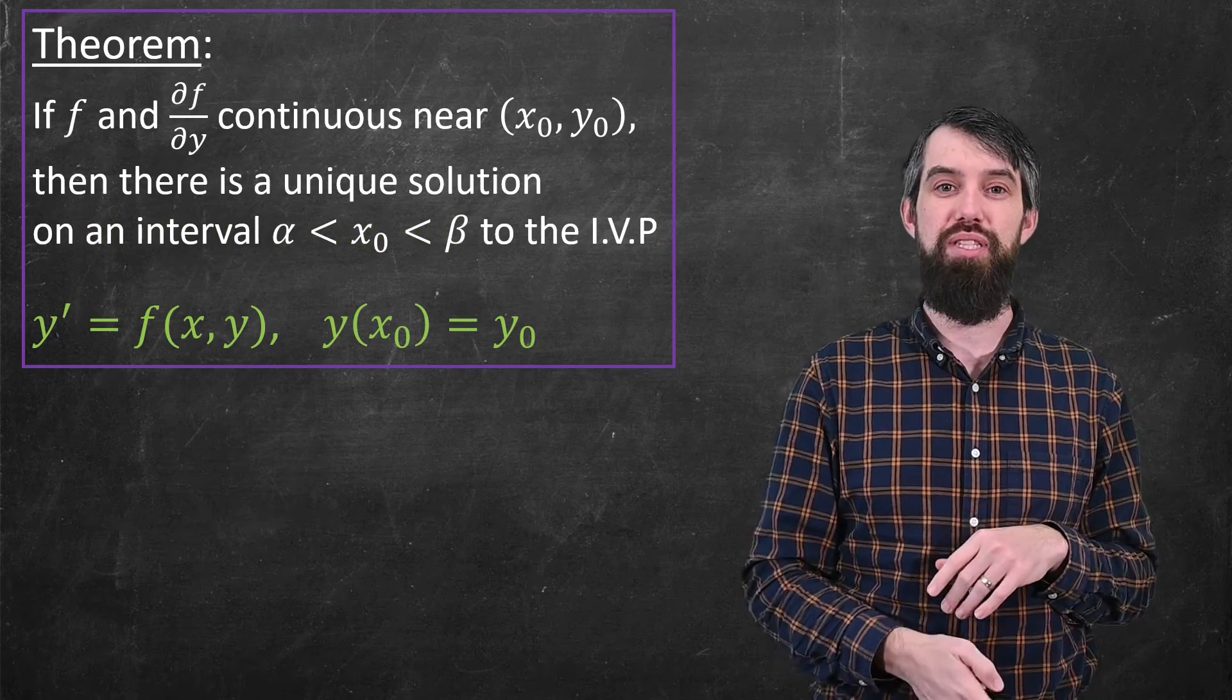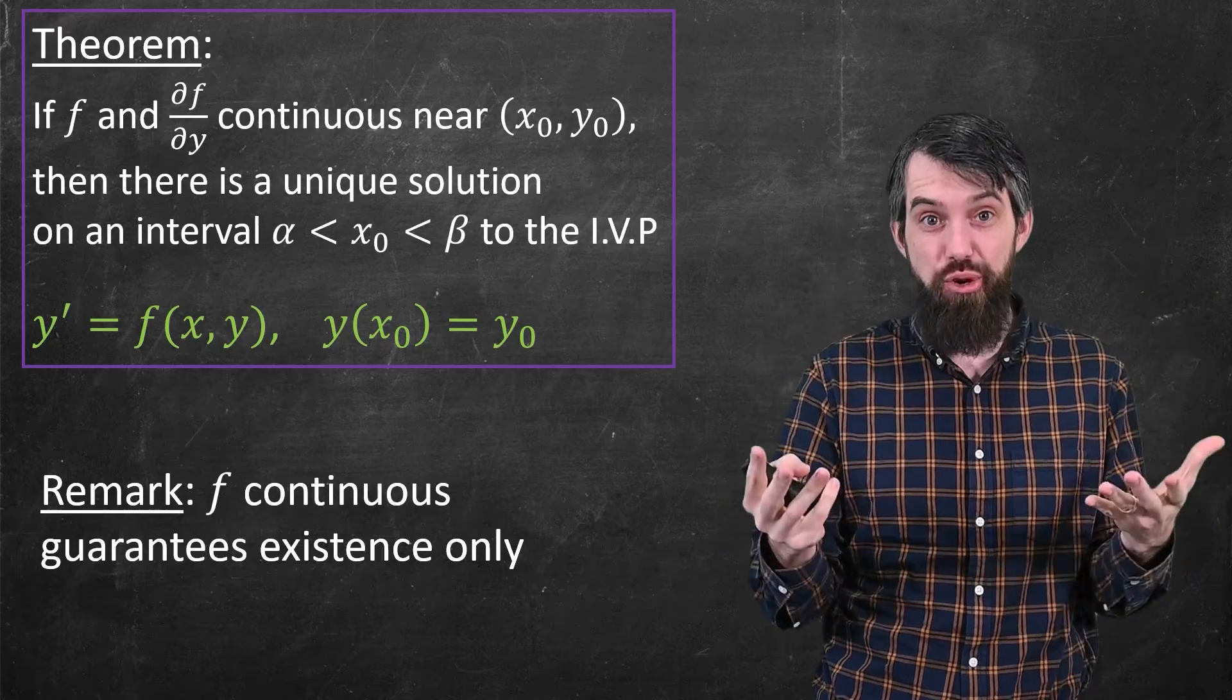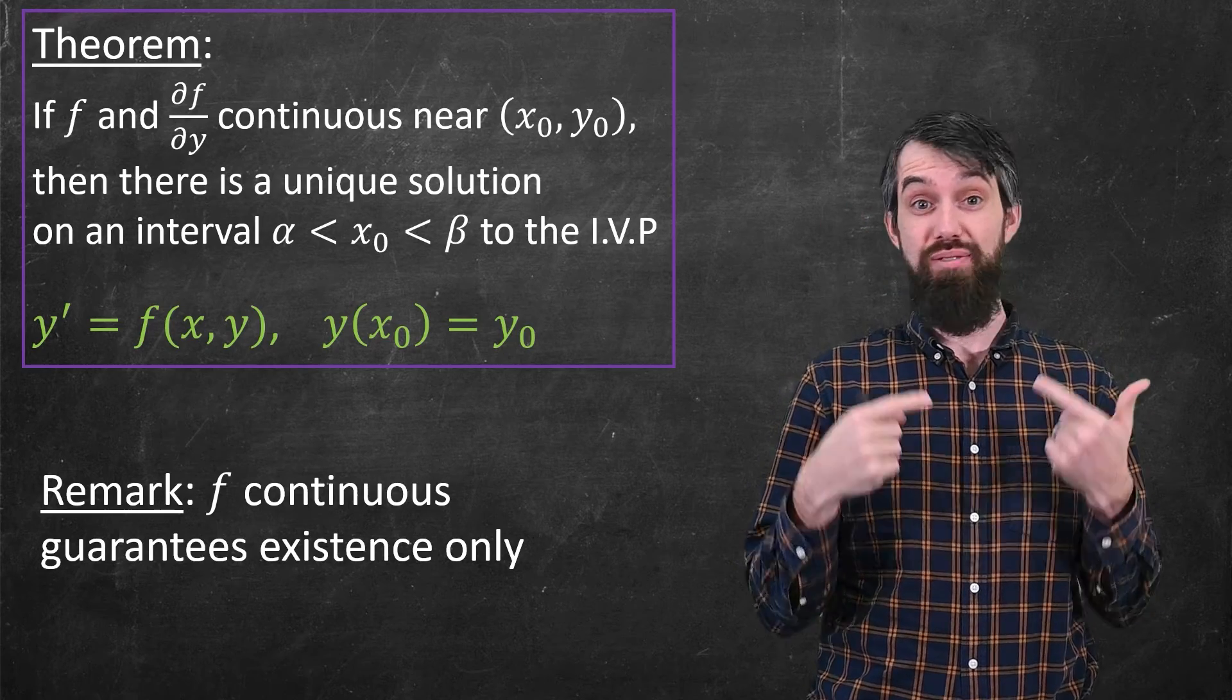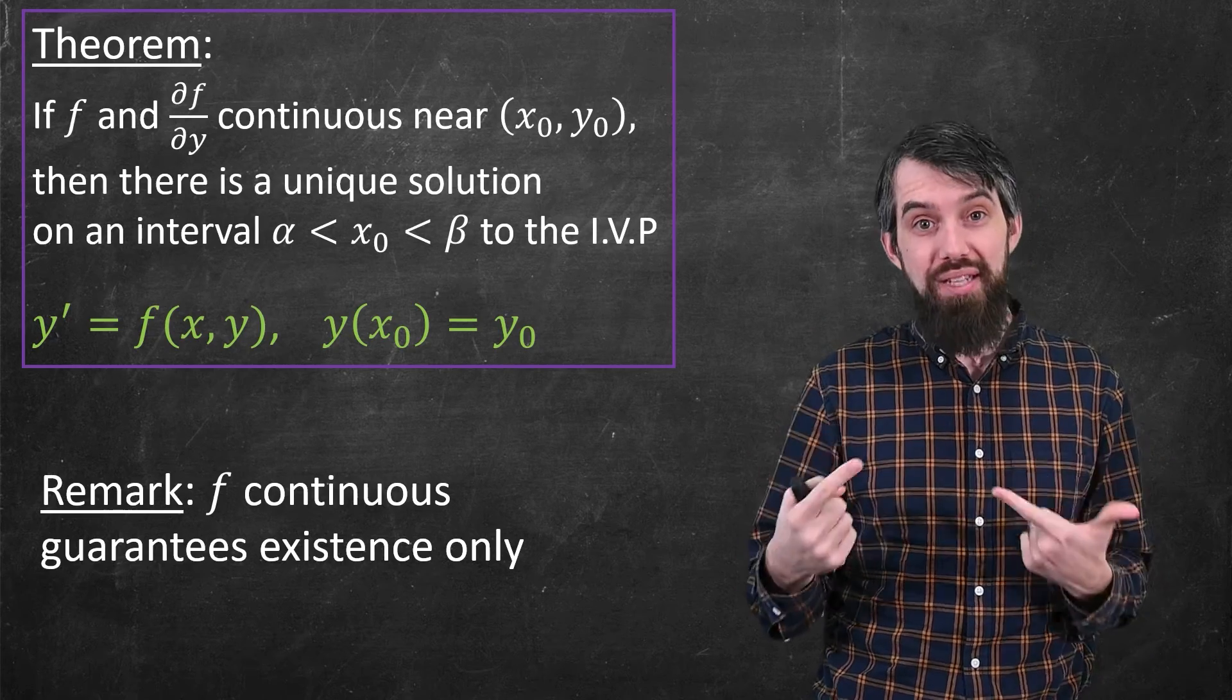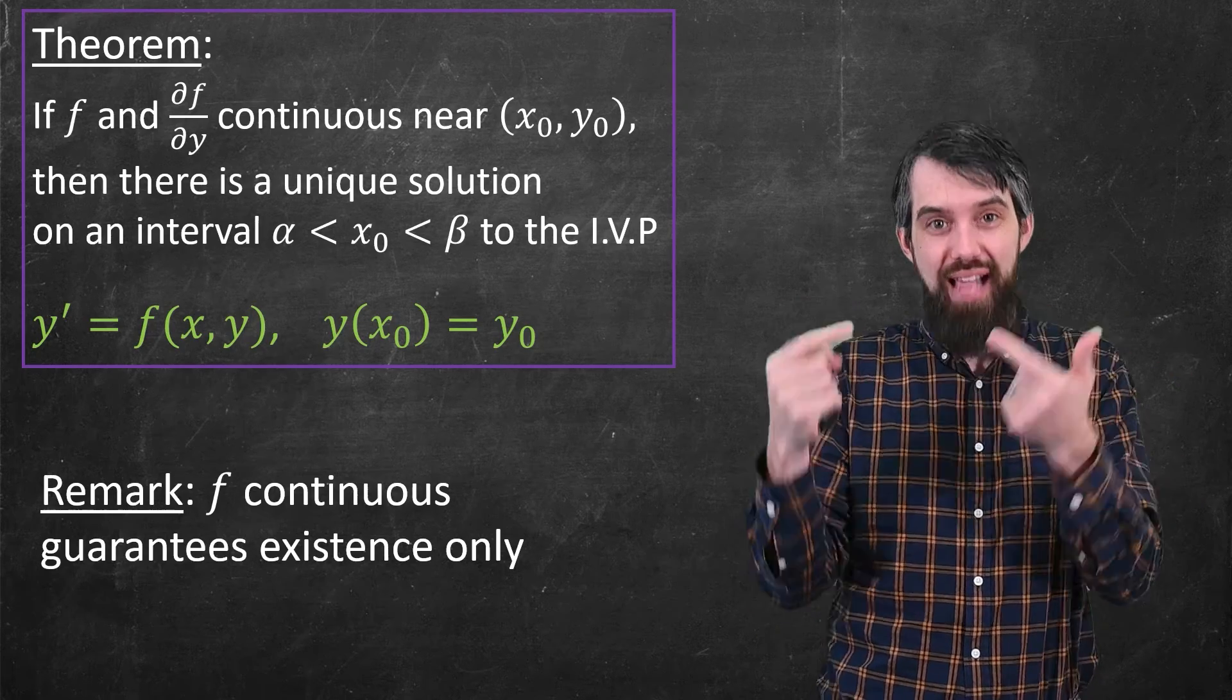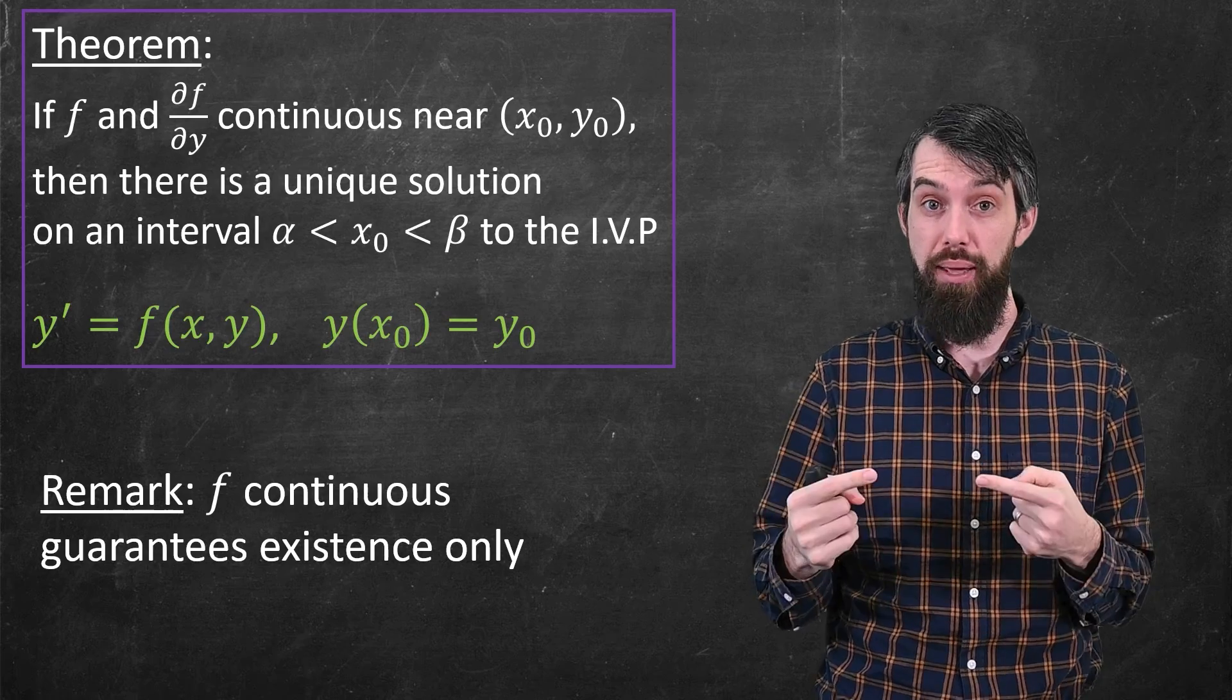And then the second remark about the theorem, I'm actually going to write it out, is that if you only had the first assumption, if you only had that f was continuous in a neighborhood of the initial condition, that is enough to guarantee alone that you have the existence of a solution. For example, in our second example, where f was y^(1/3), that was a continuous function about zero, and so indeed the first condition was satisfied and there did exist a solution. And then it's only when you add the second condition that the partial of f with respect to y is also continuous that you then go and get that the solution is going to be unique.